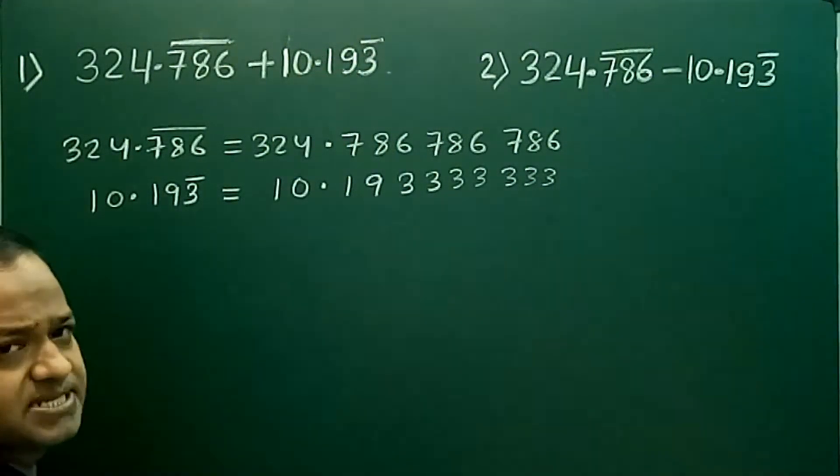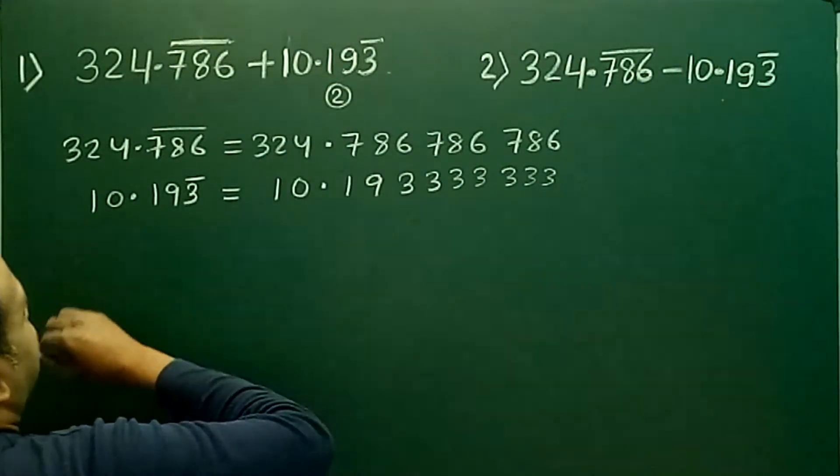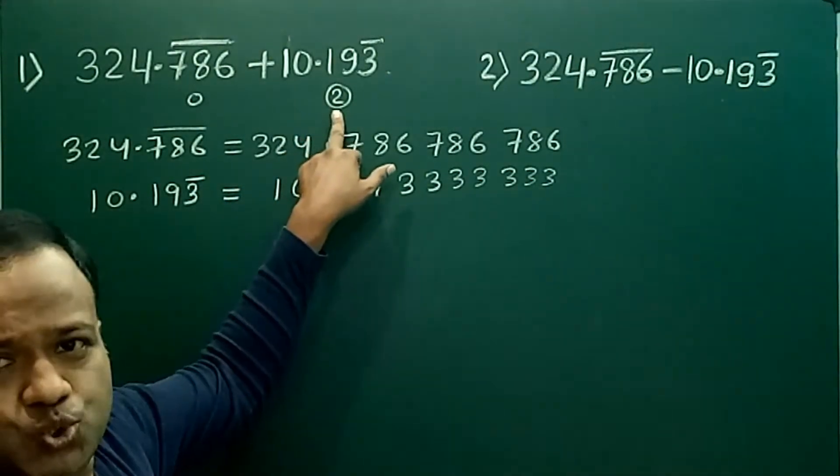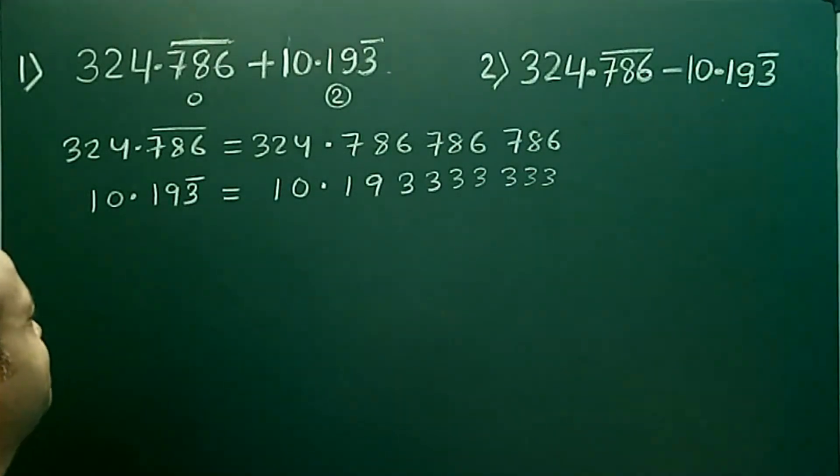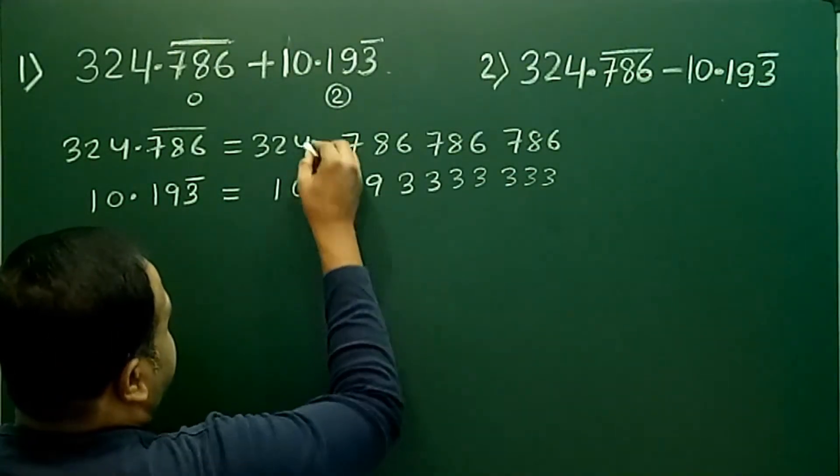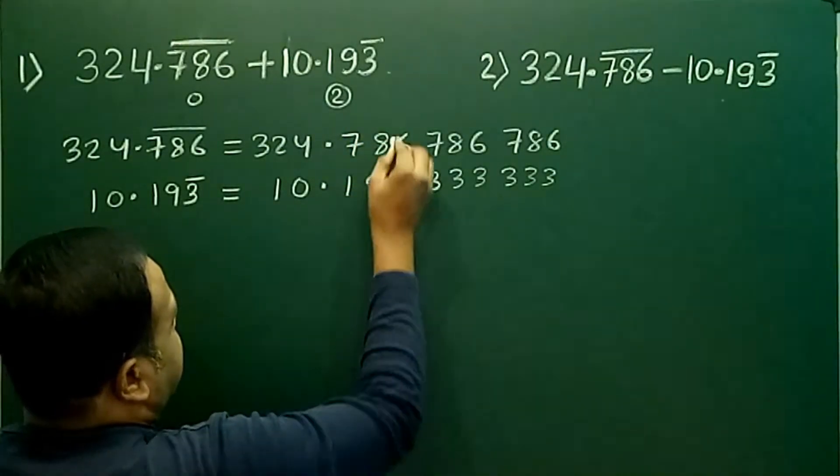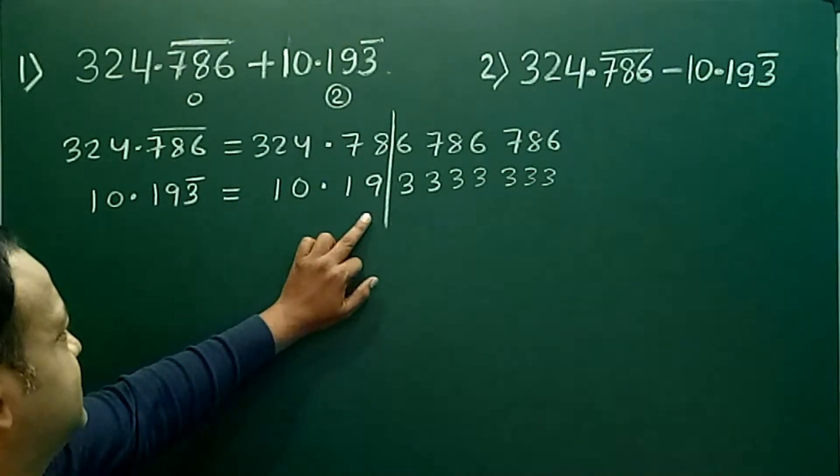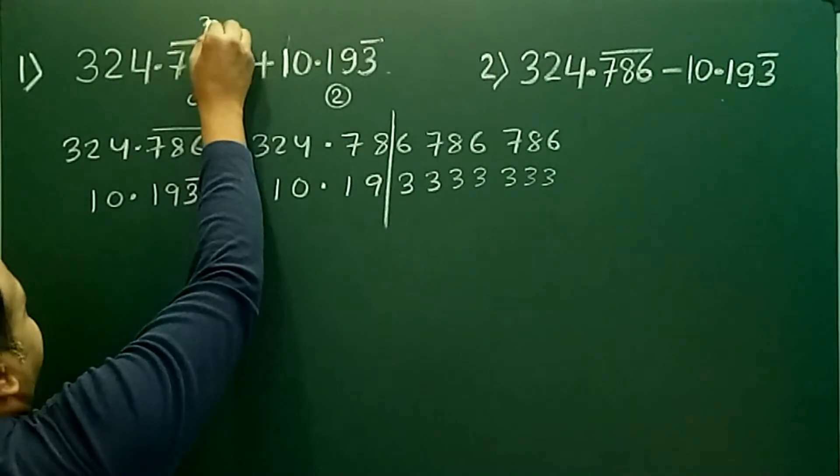Now we have to remember that between the digit that is recurring and decimal, how many places are there. We find here there are two places and here no digits, so maximum is 2. It means after decimal I have to maintain two places. See, 324.78 and 10.19. If I choose it, we are able to maintain two decimal places. We will see how many digits are recurring here: 3.